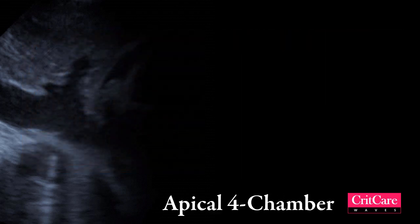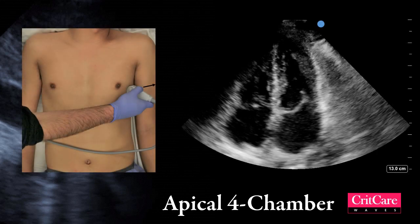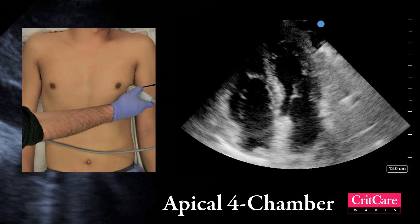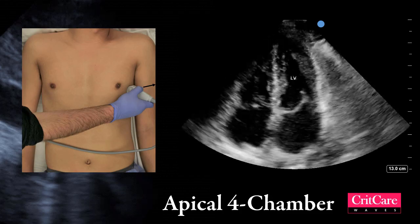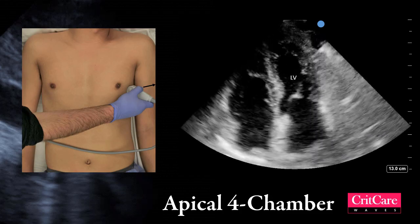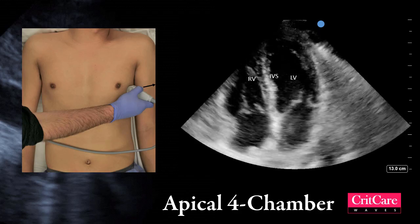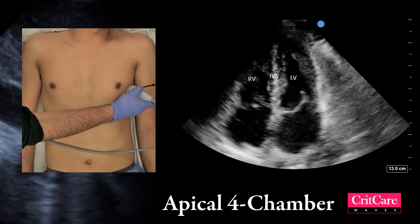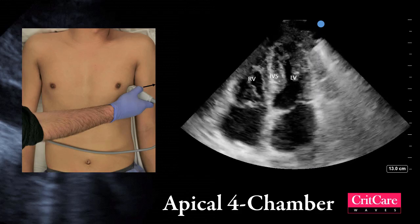Let's start with the apical 4-chamber view. Since our marker is pointing towards the left, the left-sided structures are on the same side as the marker. The thick-walled left ventricle is seen with the right ventricle adjacent to it and the interventricular septum in between.